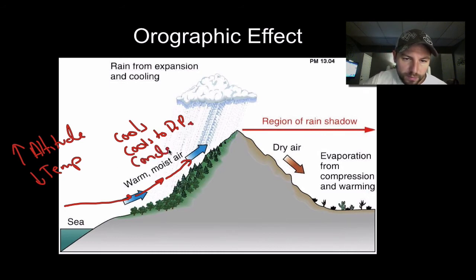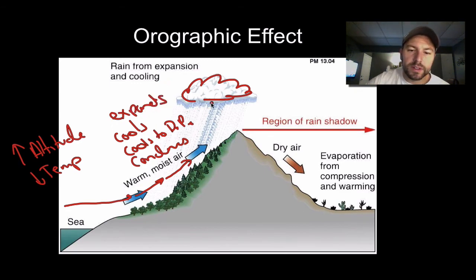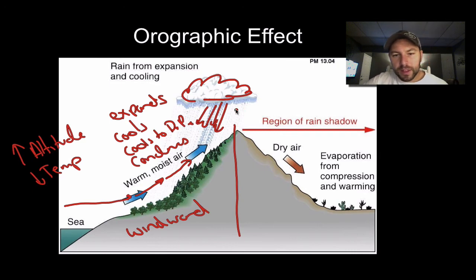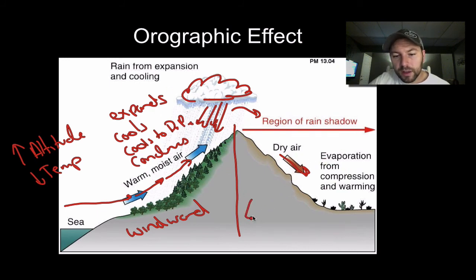When it cools to dew point, it condenses and we get a cloud to form. Notice that as it rises, it also expands — so it expands, cools, cools to dew point, condenses, and eventually rains on this side. This side of the mountain where it rains is known as the windward side — it's where the wind is coming from. The air then makes it up and over the mountain where it descends, and when it descends, it warms and compresses. It released all that humidity on the windward side, and now this area is really dry — also known as the leeward side of the mountain.